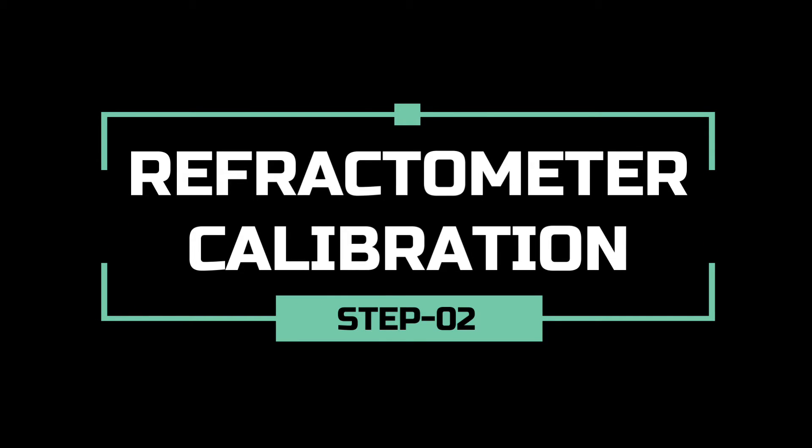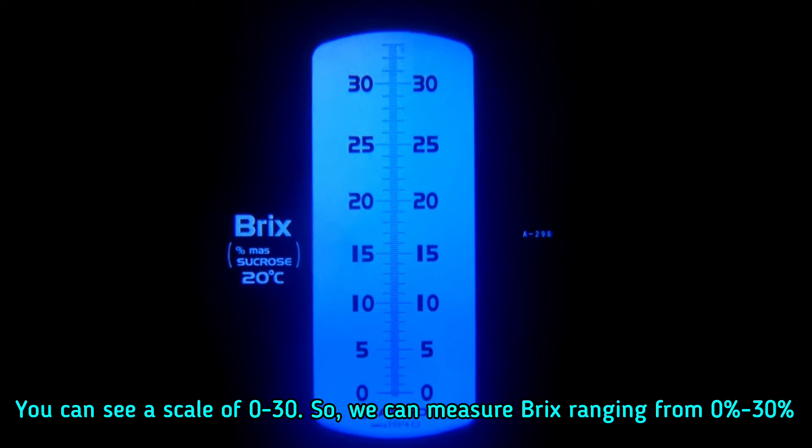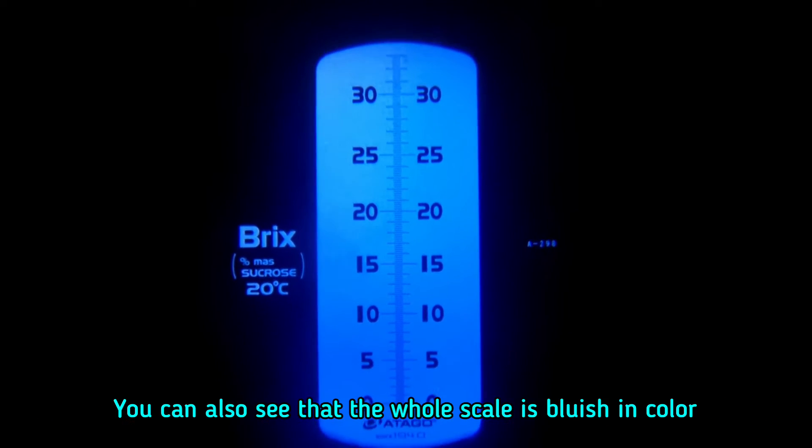Now we have to calibrate the refractometer with distilled water before going to the main test. You can see our scale from 0 to 30, so we can measure Brix ranging from 0 to 30 percent.